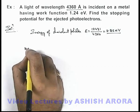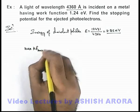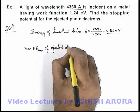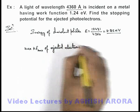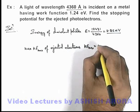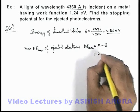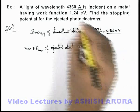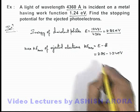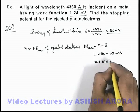Now if we calculate the maximum kinetic energy of the ejected electrons, this kinetic energy maximum can be given by E minus φ. So the incident energy is 2.85 minus the work function 1.24 electron volt, giving a maximum kinetic energy of 1.61 eV.